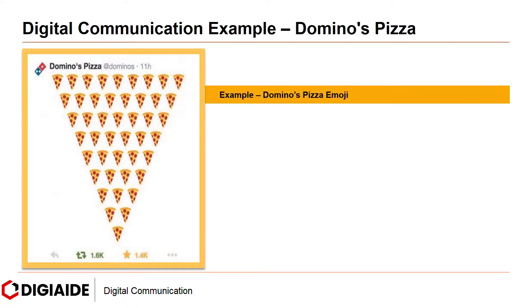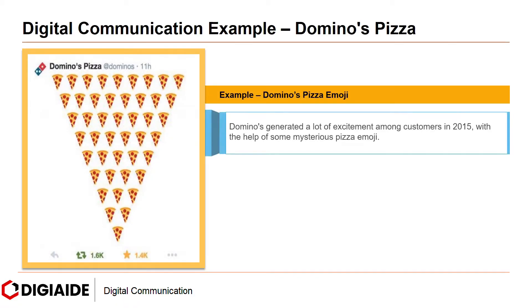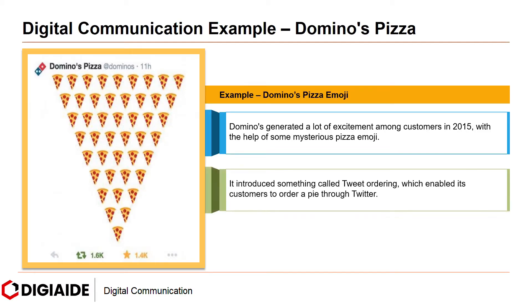Next, Domino's Pizza emoji. Domino's generated a lot of excitement among customers in 2015 with the help of some mysterious pizza emoji. It introduced something called tweet ordering, which enabled its customers to order a pie through Twitter.